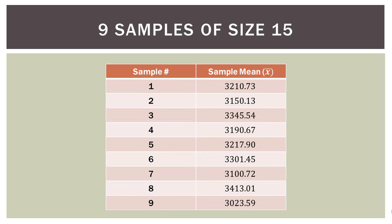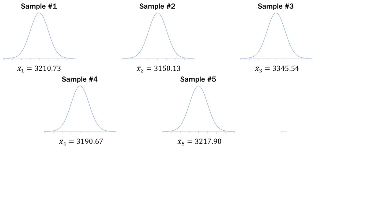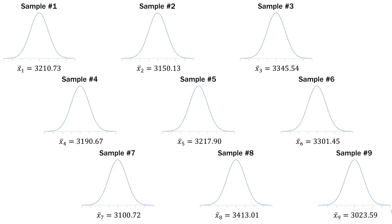The company took nine samples. Each sample has 15 measurements in it. Sample one had 15 measurements and that sample mean was 3,210.73. Then they took sample number two, which also had 15 measurements, and that sample mean was 3,150.13. So they took nine samples, each of the same size — 15 measurements — and these are the sample means for all nine samples. You can see that it's X-bar subscript one, X-bar subscript two, and so on — those are the measurements for each sample. Think about each sample mean as having its own distribution. When you're taking multiple samples from a population, each sample has its own sample characteristics.